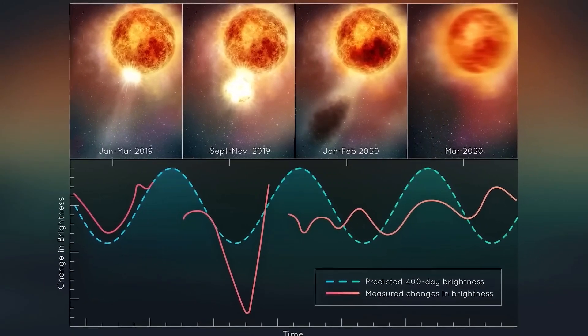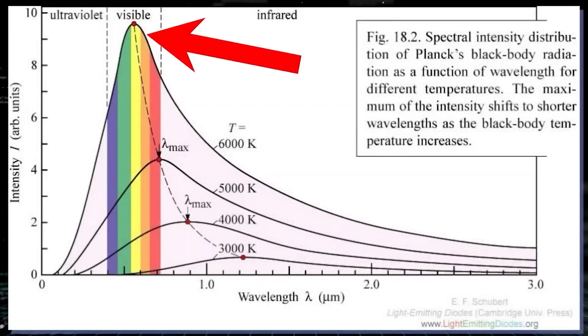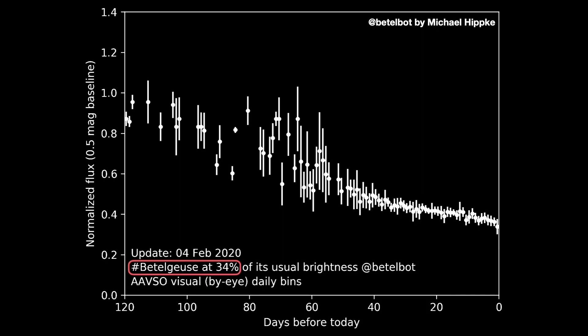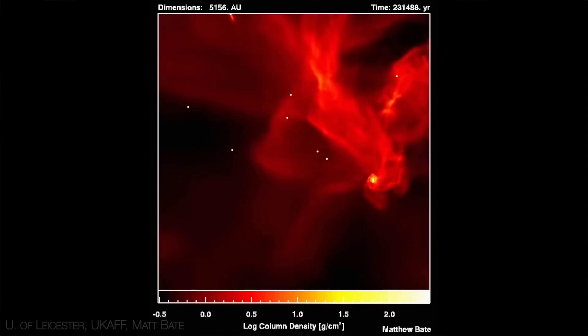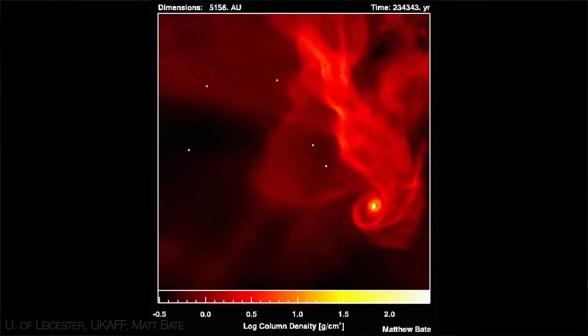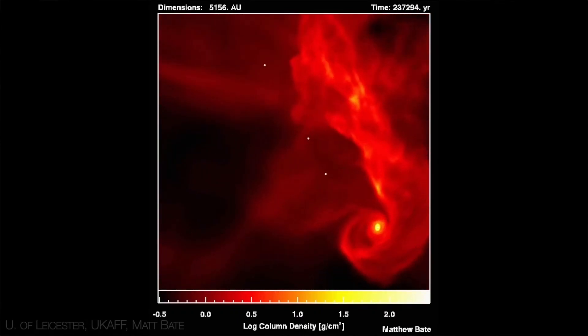If the 420-day period is the main one, then Betelgeuse would be 800 to 900 times the size of our Sun, lined up one after the other. If placed in the solar system, it would almost reach the orbit of Jupiter.